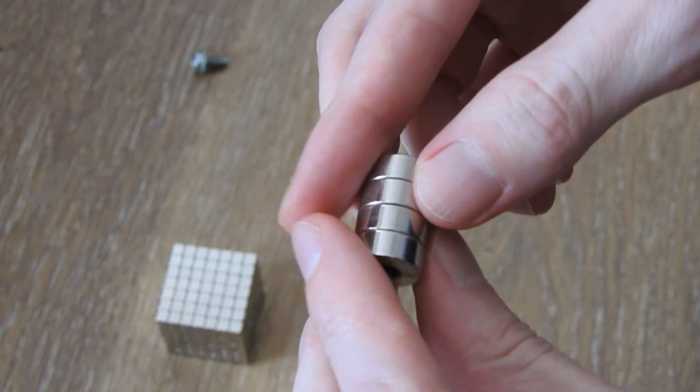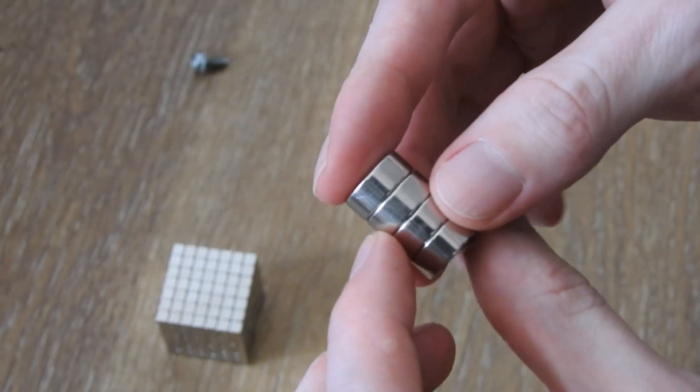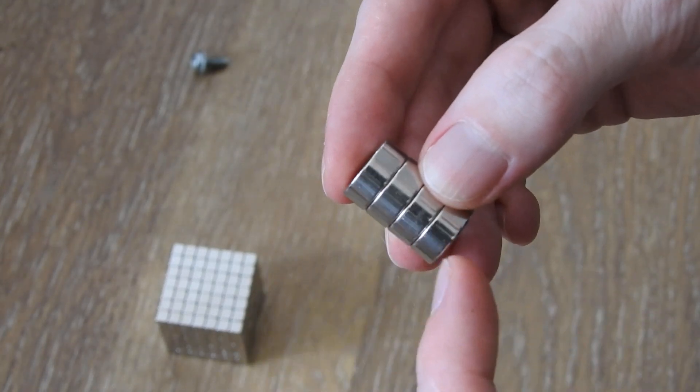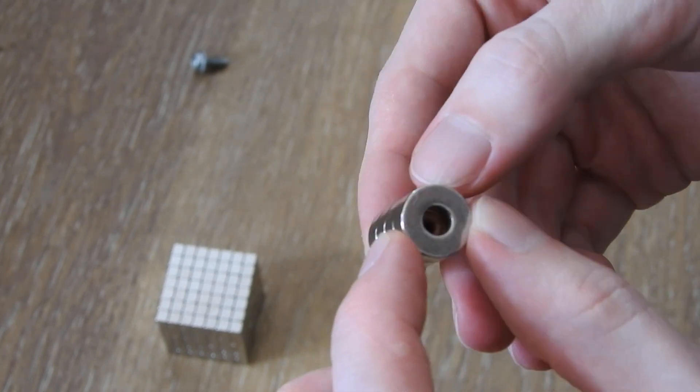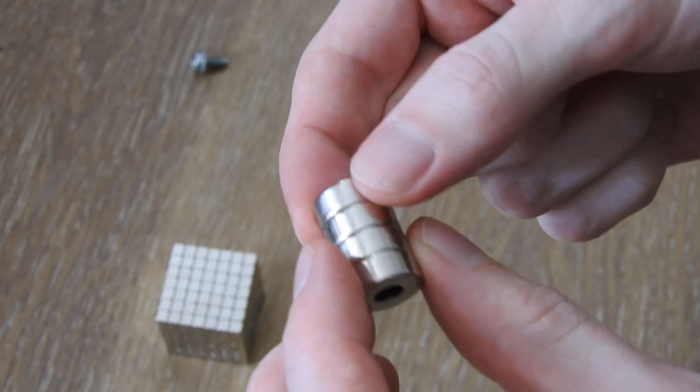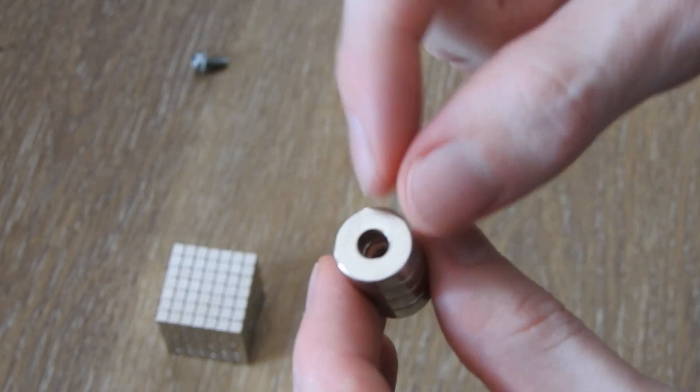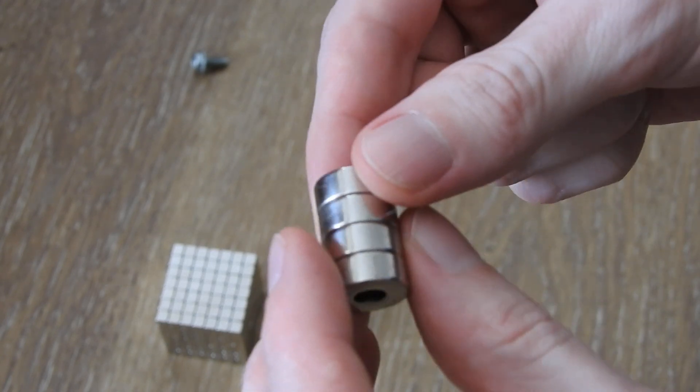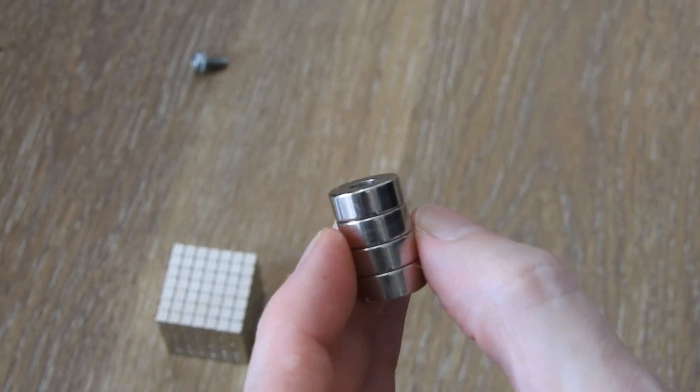But with this one the geometry of the magnets, these are much wider and not so small, so the field has a more regular shape that you would expect from a magnet.